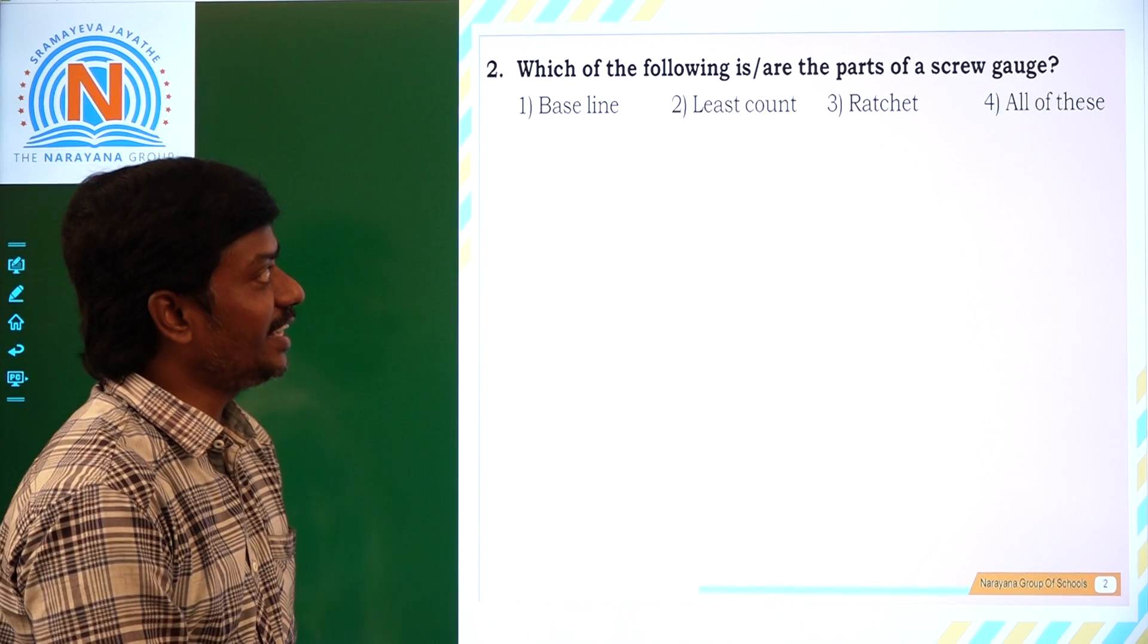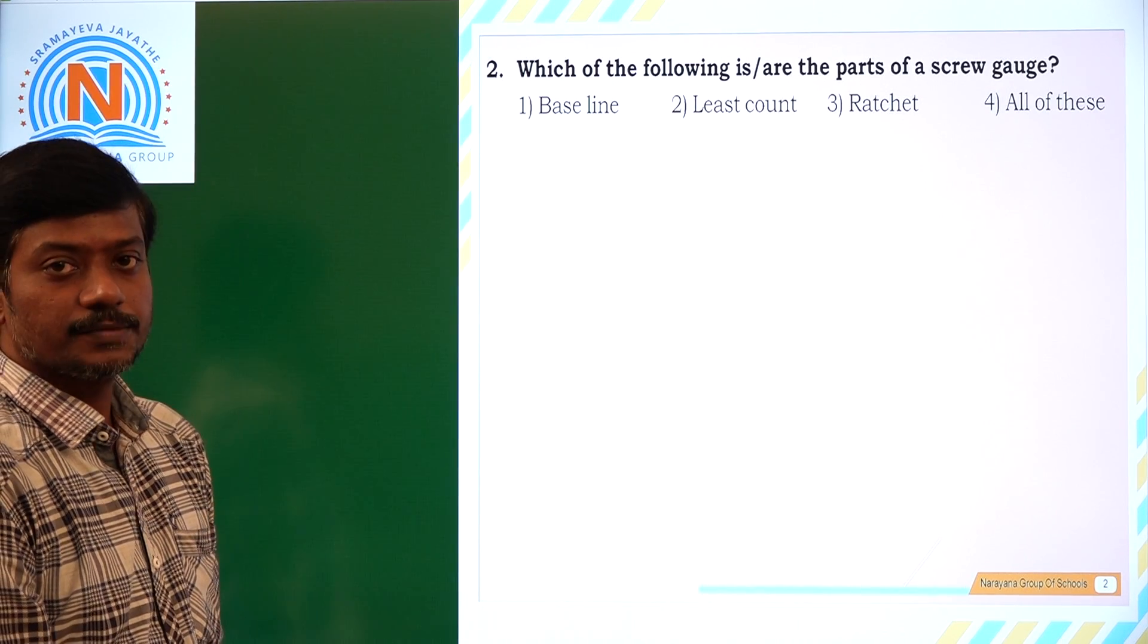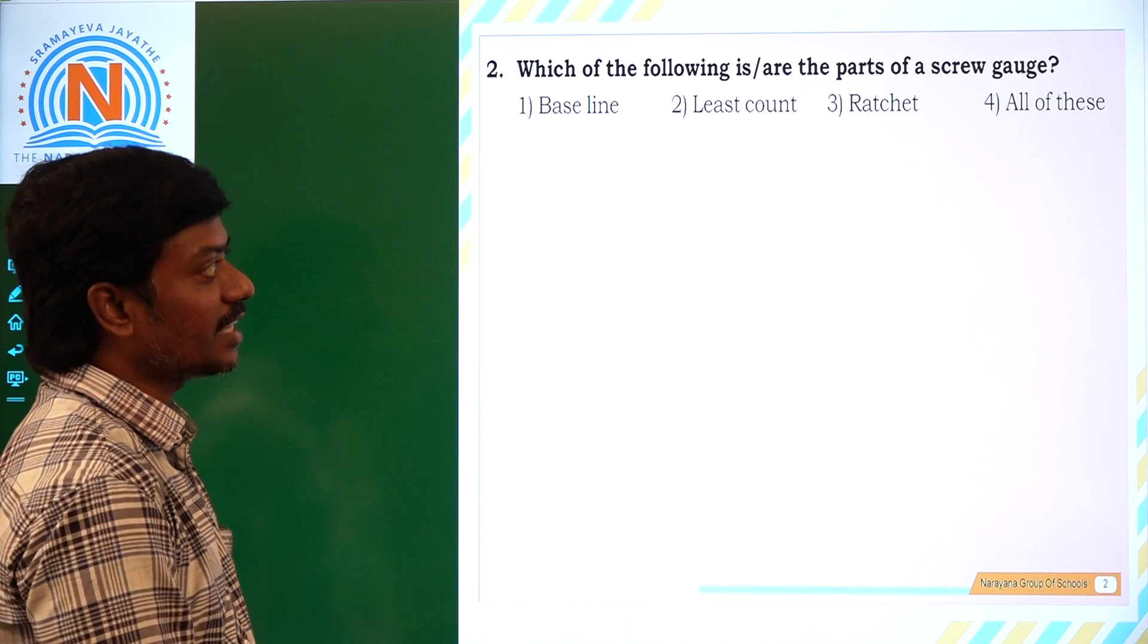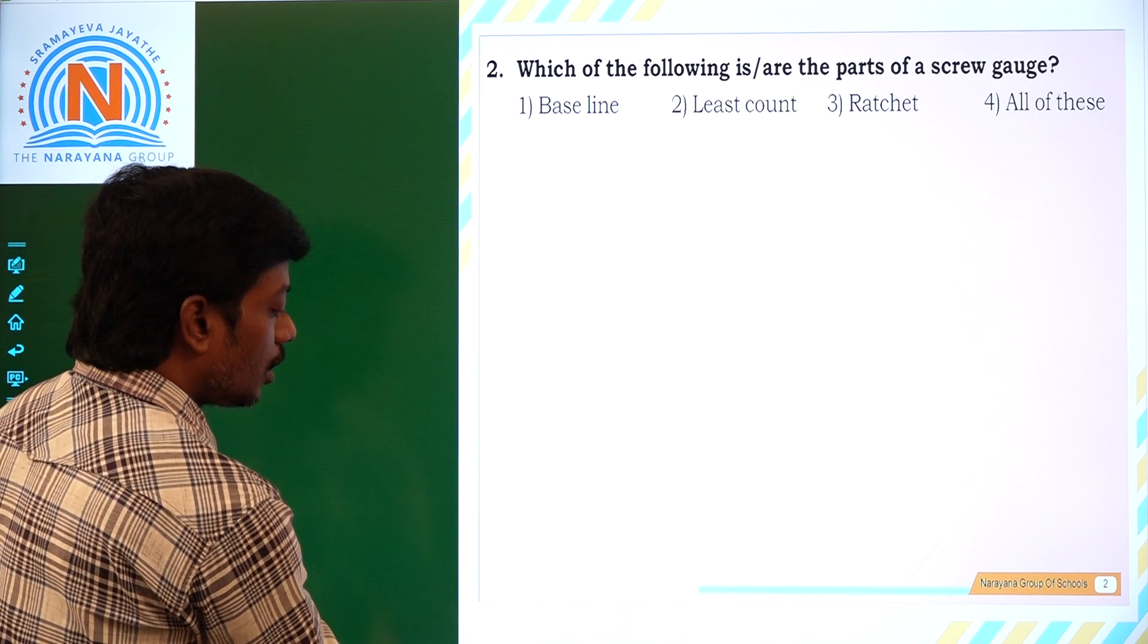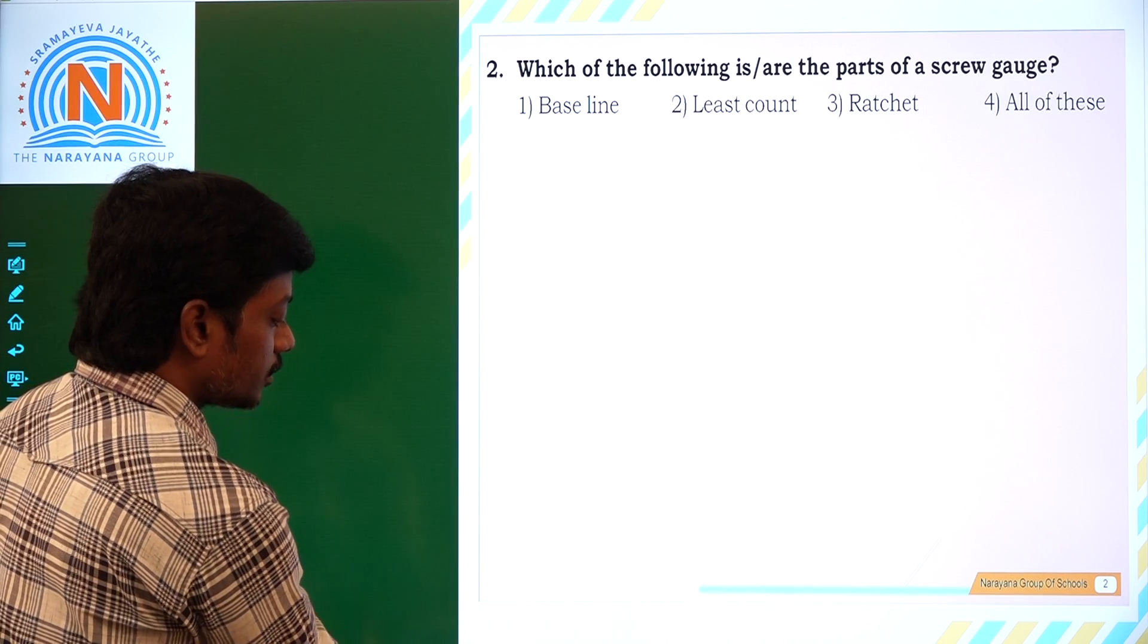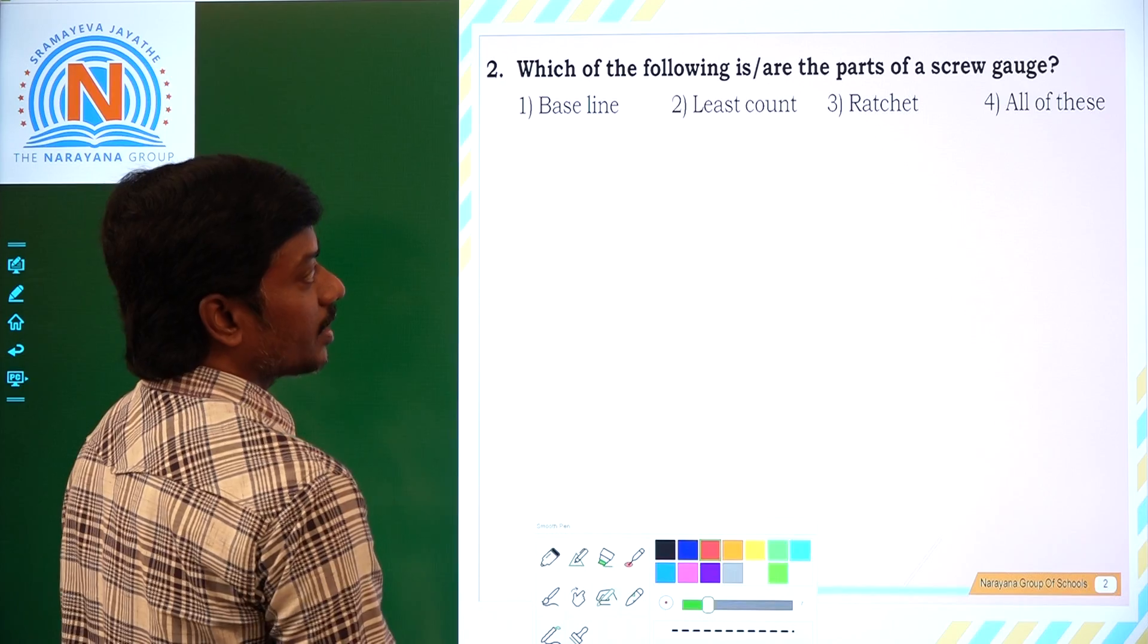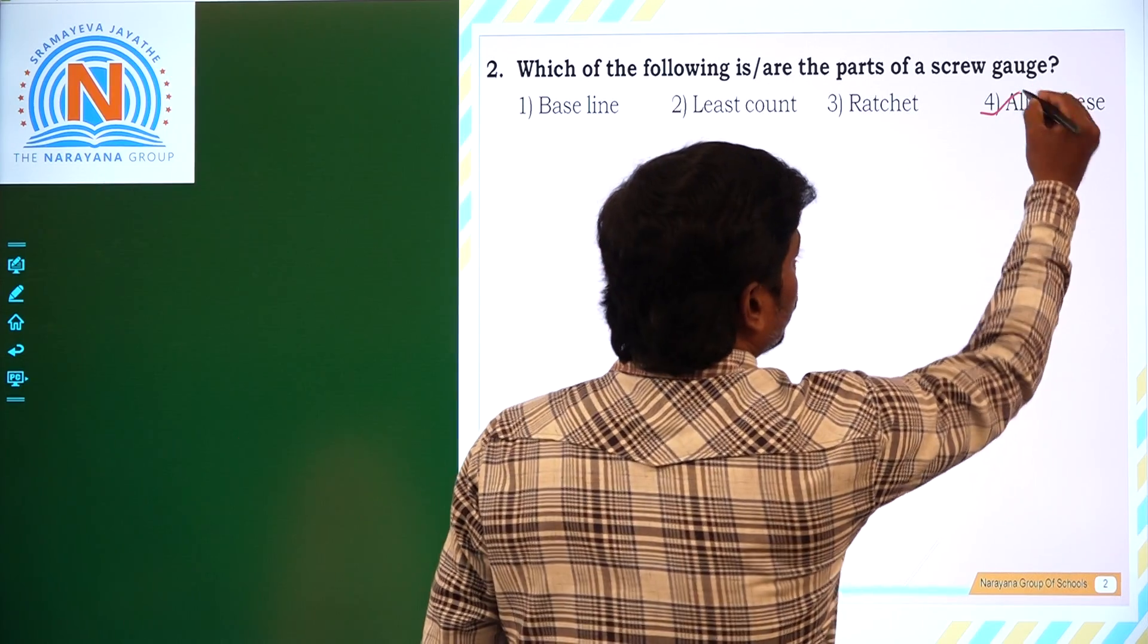Which of the following are the parts of screw gauge? First one, baseline, least count, ratchet, all of these. So all of these are parts of screw gauge. That's why baseline, least count, ratchet, all are correct. So fourth option is correct.